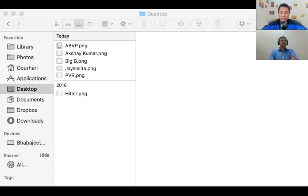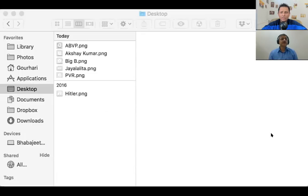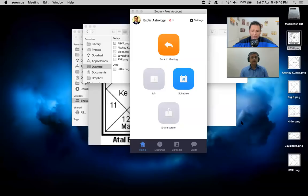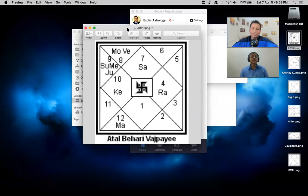So this is the chart of Atal Bihari Vajpayee. Prime Minister of India, one of my favorite politicians. So here if you see Saturn is in exaltation here in Libra and it is giving the Sasa Mahapurush Yoga also because it is in Kendra.